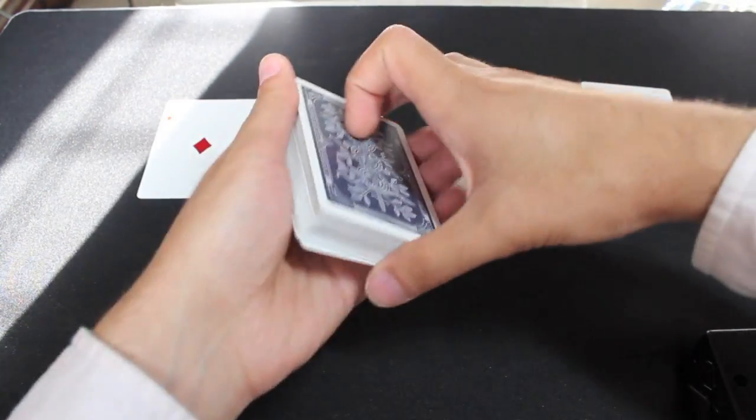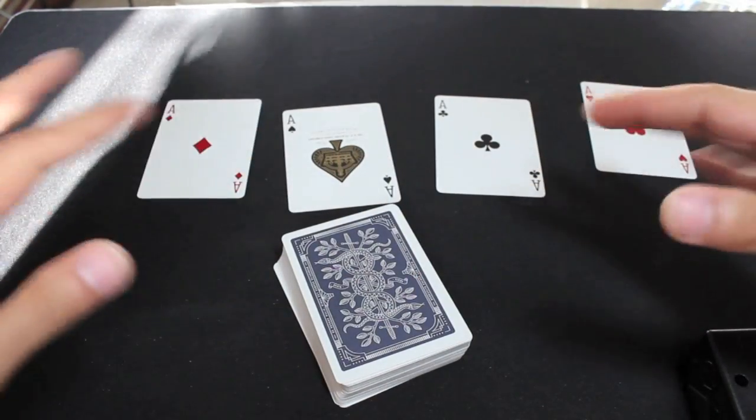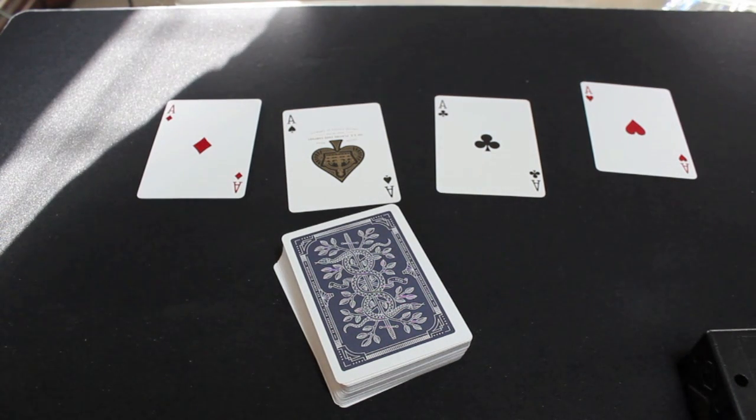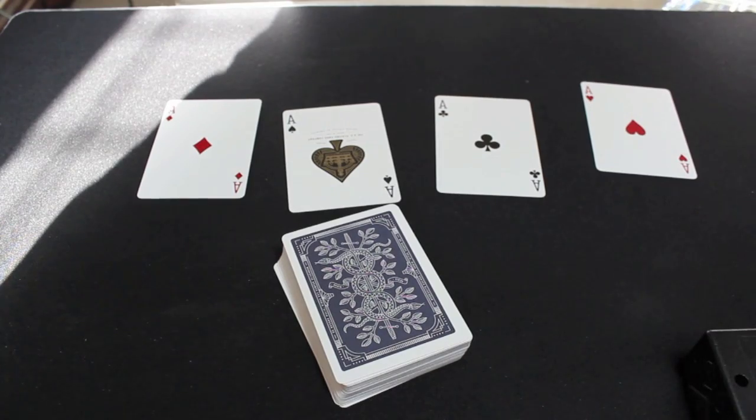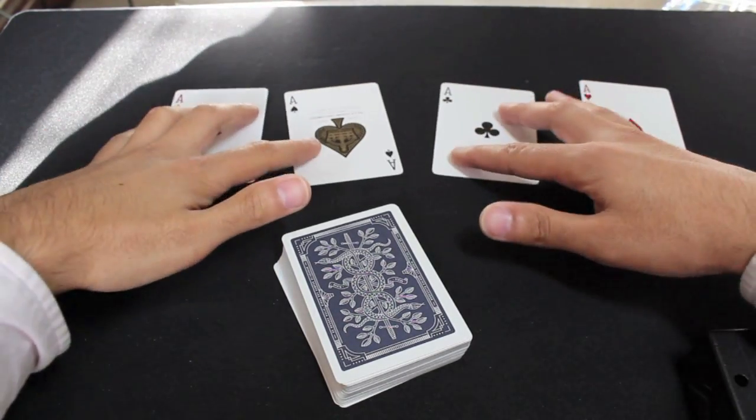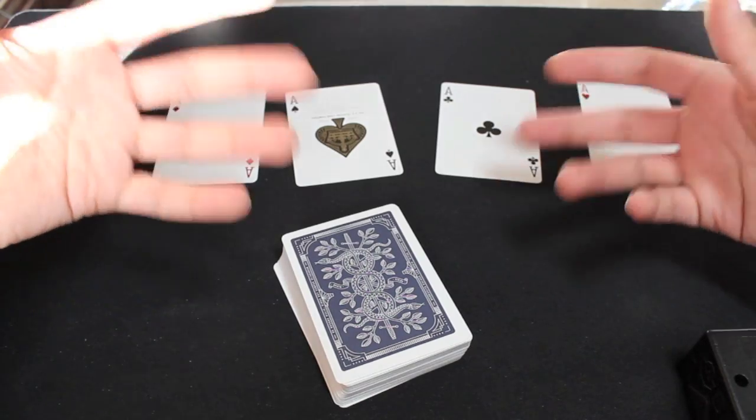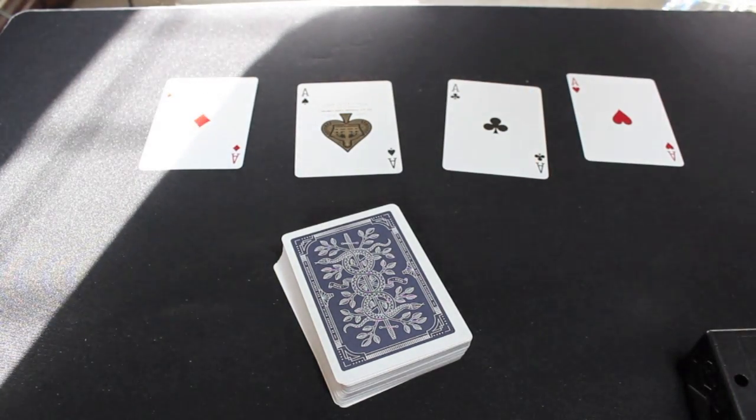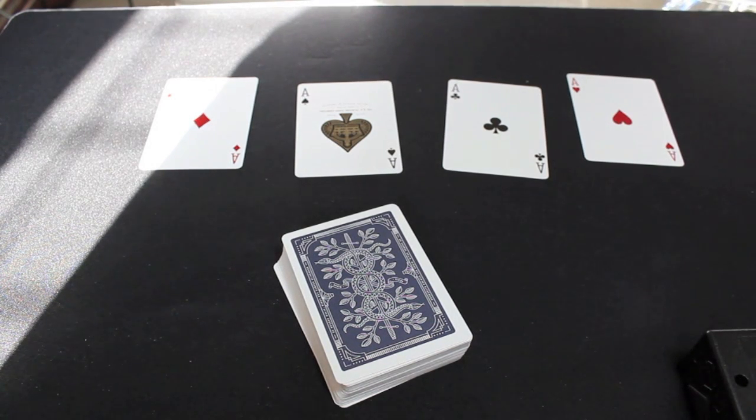So check out the performance video, that will give you a much better idea of the timing of all that, and what it actually looks like. But that's the trick in a nutshell. Definitely use this one, it's really great. And quick setup, big impact at the end. And it's a great starter trick, because from here you can do any four ace trick that you want. So that's all for now. I hope you guys liked that, and I will see you next time. Bye.